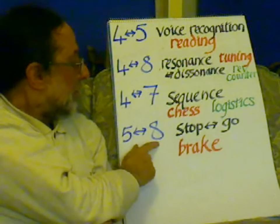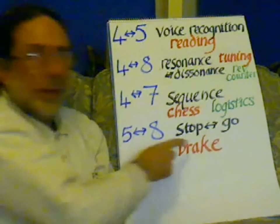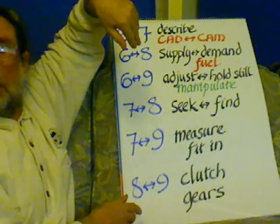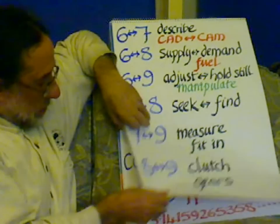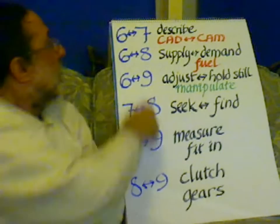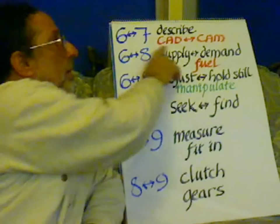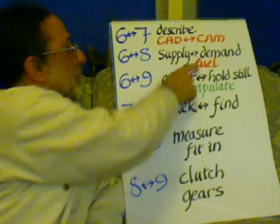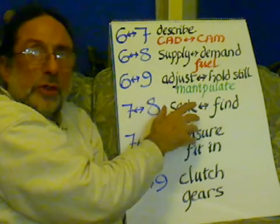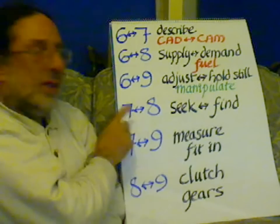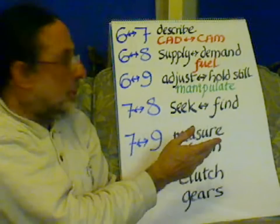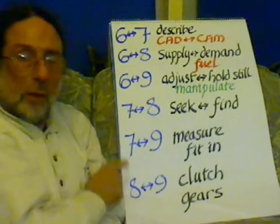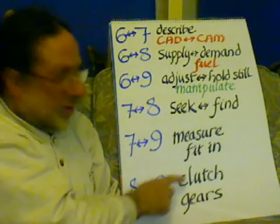From 5 to 8 is just the stop and go — basically the brake in the simple function. From 6 to 7 is to describe an object — the CAD-CAM manufacturer. From 6 to 8 is supply or demand — obviously economics, the fuel. From 6 to 9 is to adjust or hold an object still — to manipulate it. From 7 to 8 is seek a particular object — seek and find. From 7 to 9 is measure and fit a particular object, and from 8 to 9 is the clutch and the gears.